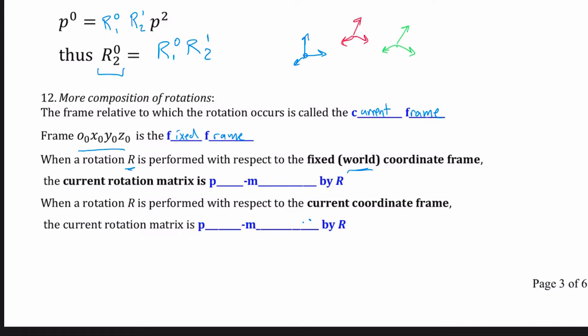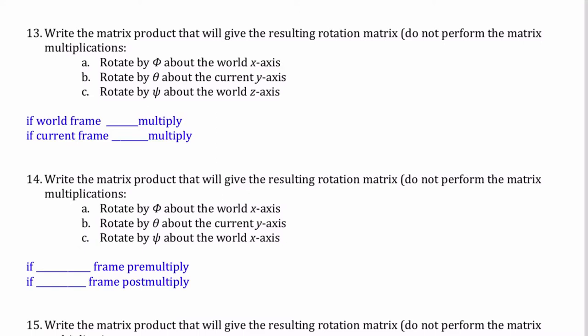When the rotation R is performed with respect to the fixed world coordinate frame, the current rotation matrix is pre-multiplied by the rotation R. But if that rotation R is performed with respect to the current coordinate frame, the current rotation matrix is post-multiplied by R. Let's do some examples to make this a little more clear. So remember, if it's a world frame, then what we want to do is pre-multiply. And if it's a current frame, then we post-multiply.